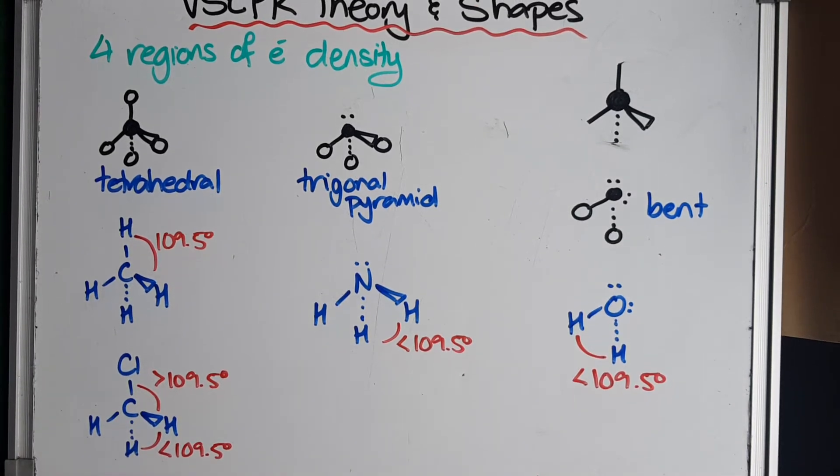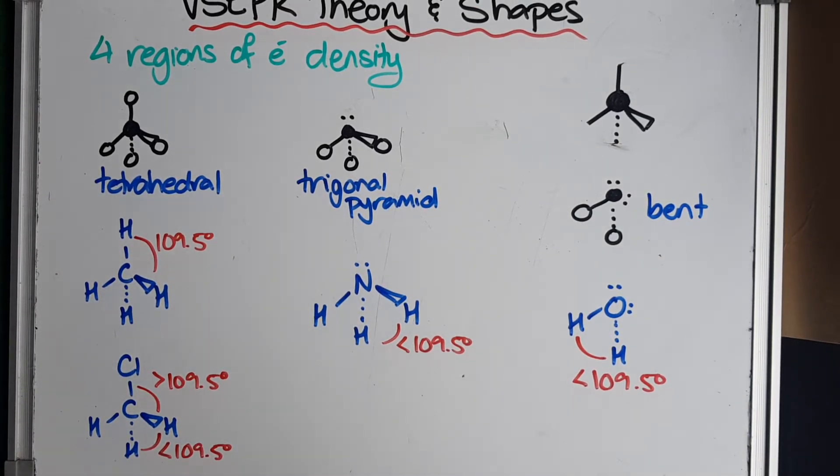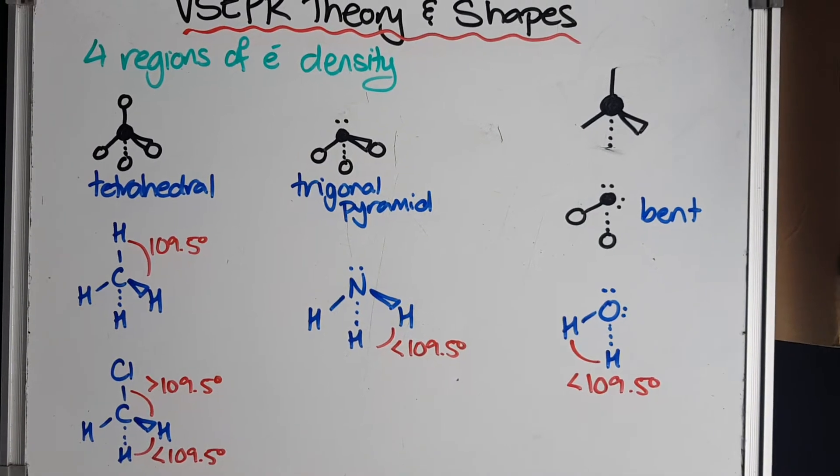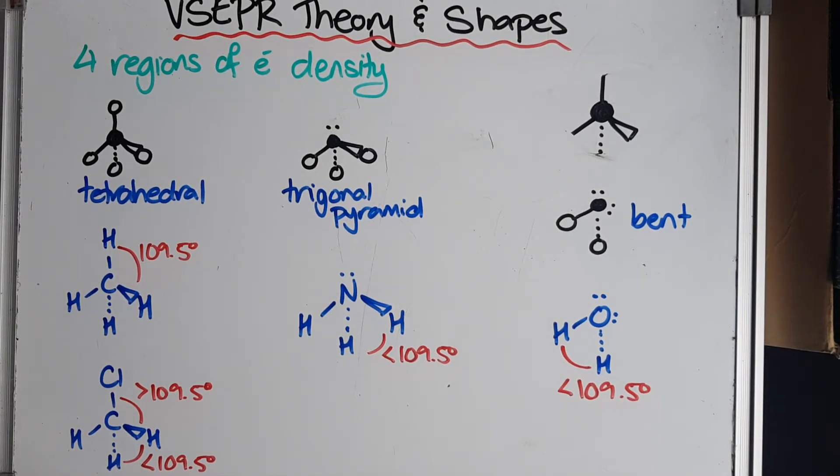This is probably where our shapes and bond angles start getting a little bit more complicated because we have to start thinking in three dimensions, which is hard for our brain to imagine.